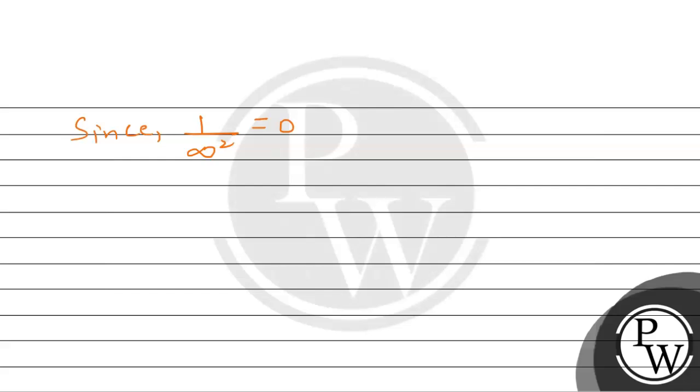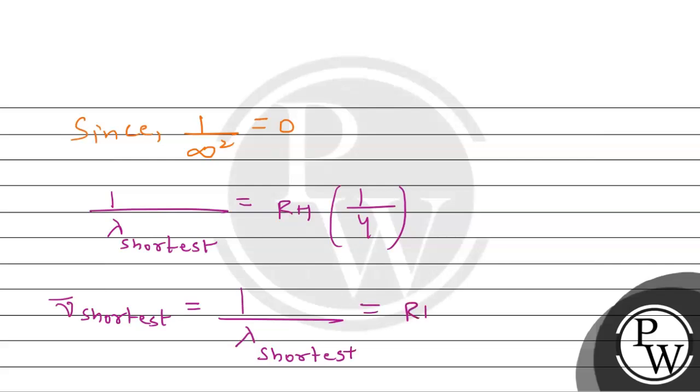So equation जो है, वो हमारे पास कहां रह जाएगी? 1 divided by lambda shortest will be equal to RH multiplied by 1 divided by 4. तो यहां पर हमें wave number calculate करना है shortest. So that will be equal to 1 divided by lambda shortest. इसका मतलब है that will be equal to RH multiplied by 1 divided by 4.